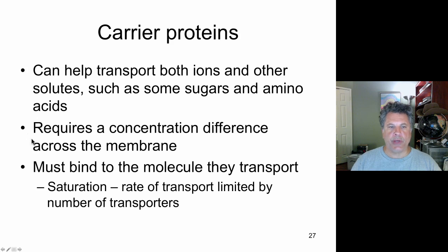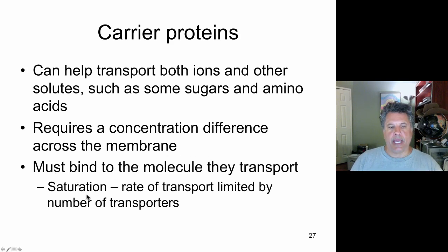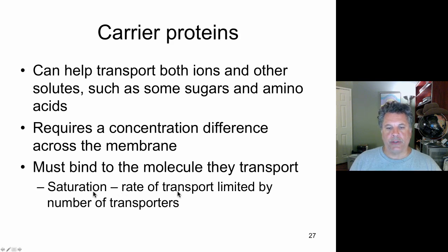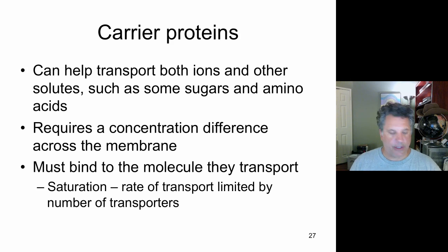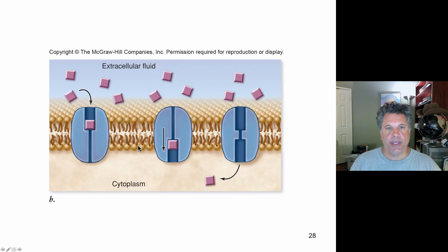Carrier proteins do require a concentration difference across the membrane and they bind to the molecule that they are transporting. Unlike ion channels, these can be saturated because you can only have facilitated diffusion of molecules with carrier proteins that depend upon the number of transporters available. If the number of transporters are saturated, then that limits the rate at which this type of facilitated diffusion can occur. Here's an example of facilitated diffusion brought about by carrier proteins.